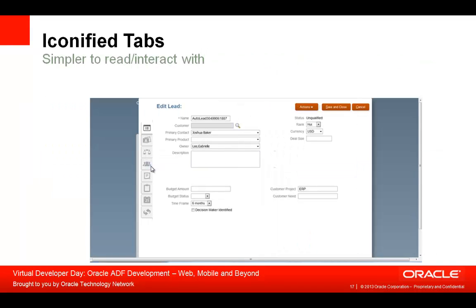Another new capability is iconified tabs. This uses the same panel tab component as before but with additional functionality. Now tabs can also be displayed on the left or the right side of the page, in addition to on the top or bottom. They can also have icons displayed on them. Icons are easier to identify instead of reading text, so consider switching your UI design to using tabs that use icons and possibly showing them on the side instead of the top.